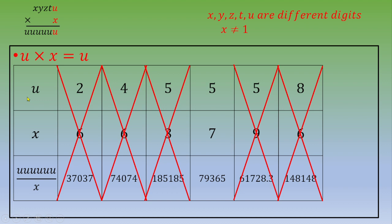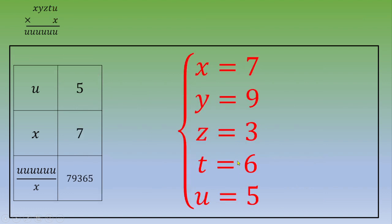which is u is equal to 5, x is equal to 7, and x, y, z, t, u. This is 79,365. So this is x is equal to 7, y is equal to 9, z is equal to 3, and t is equal to 6, and finally, u is equal to 5.